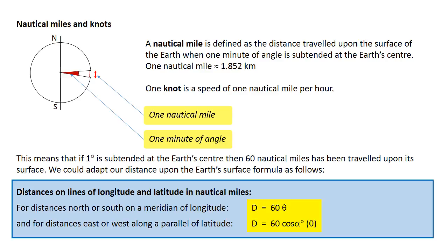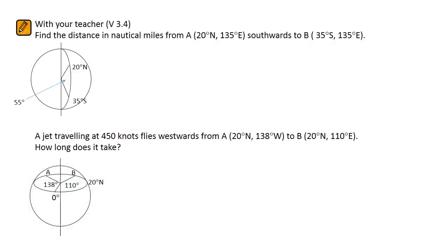Let's see how this works out in a few examples which will work together. The first of these examples asks us to find the distance in nautical miles between two places that are on the same longitude. For this type of example, a cross-sectional view of the Earth is best.